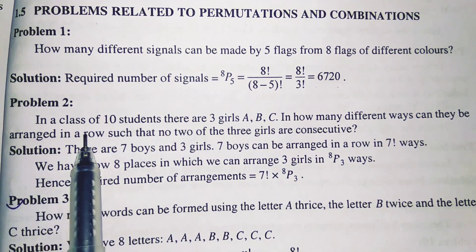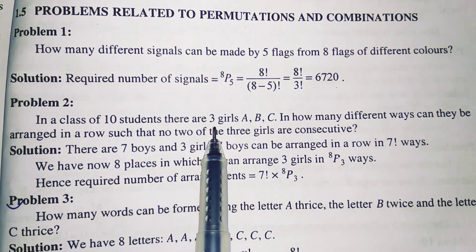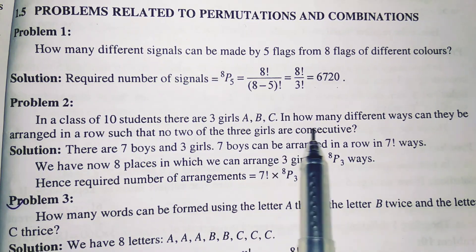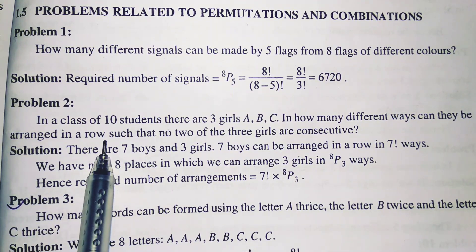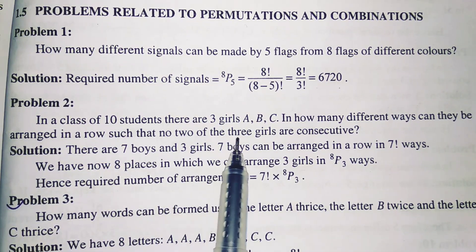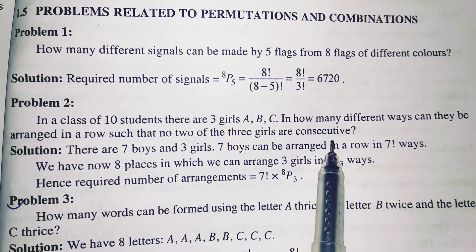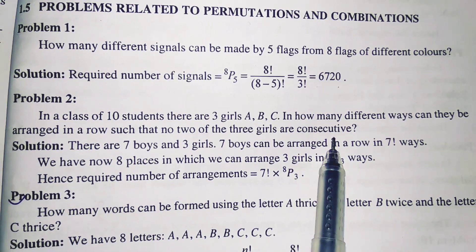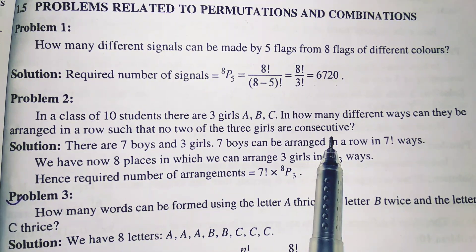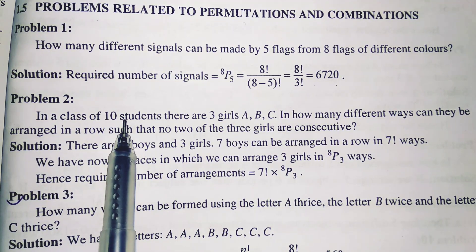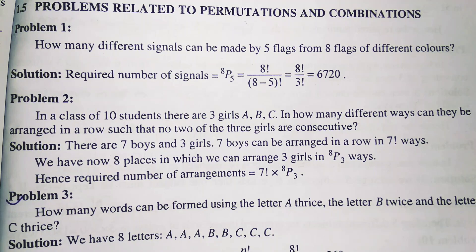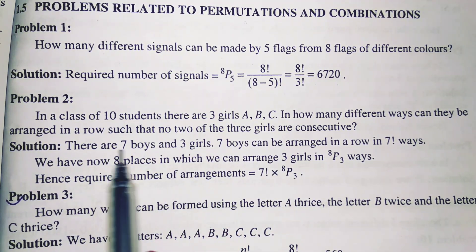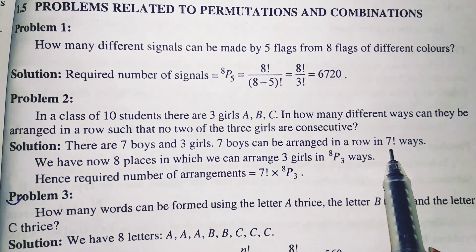The next problem: in a class of 10 students there are three girls A, B and C. In how many different ways can they be arranged in a row such that no two of the three girls are consecutive? No two girls are consecutive means among the 10 students with three girls, there are total seven boys. The seven boys can be arranged in seven factorial ways.